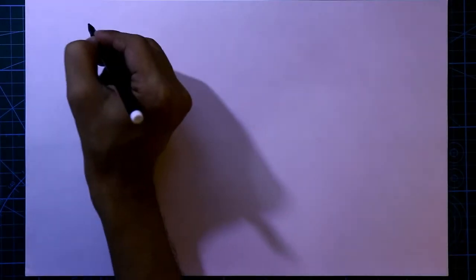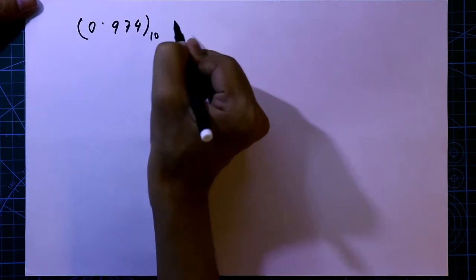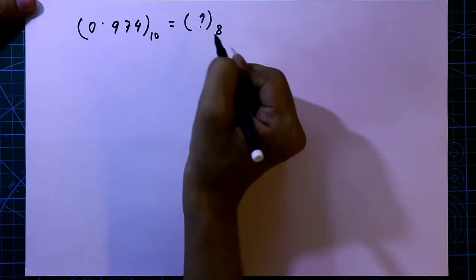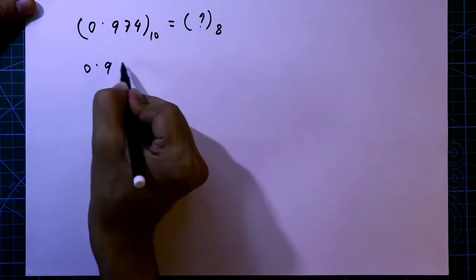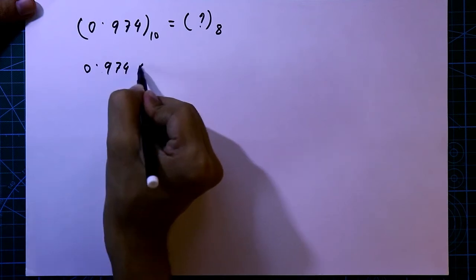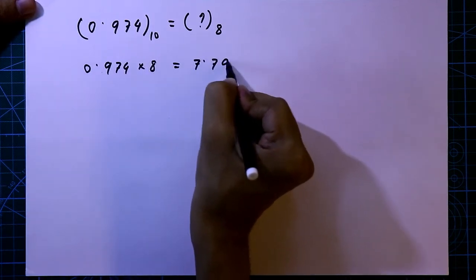For example, we are taking 0.974. Now to find out its octal equivalent, we have to multiply this number by 8. So 0.974 multiplied by 8, it is 7.792.